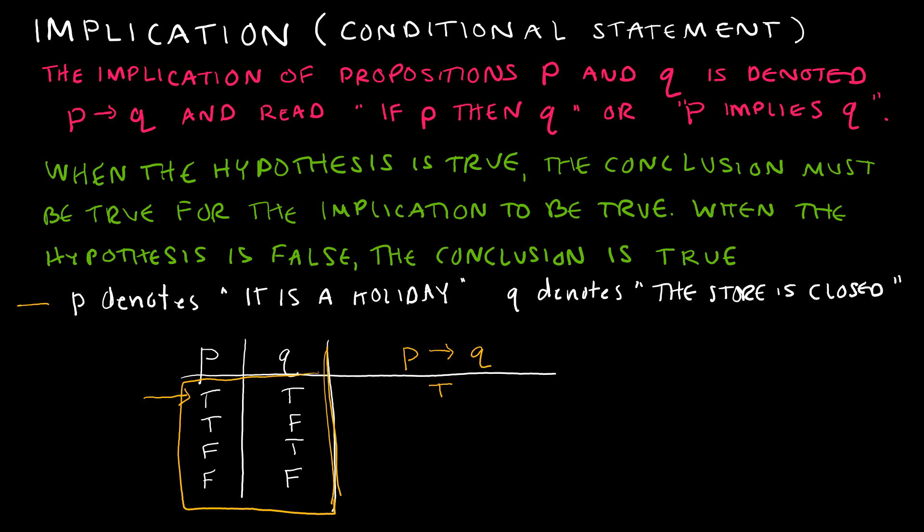Using a scenario: if p denotes 'it's a holiday' and q denotes 'the store is closed,' then we expect that if it is a holiday then the store is closed. If both are true — it's a holiday and the store is closed — that is what we expect, so it is true. On the second row, if it is a holiday (true) but the store is not closed (false), that is not what we expect, so that is false. What we need is: if p is true, q must also be true for the implication to be true.